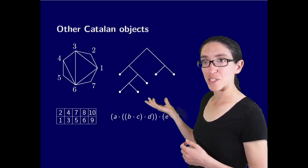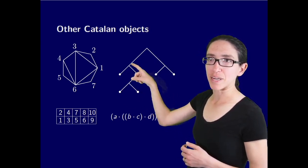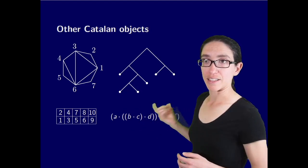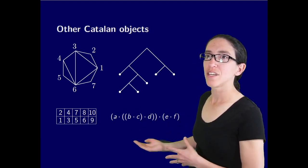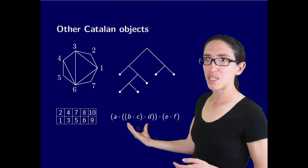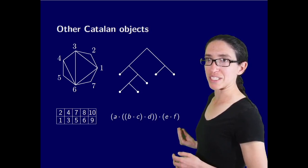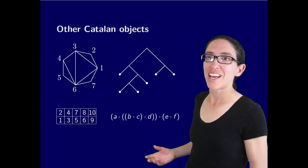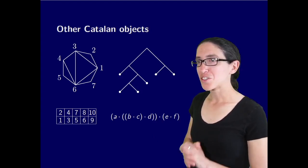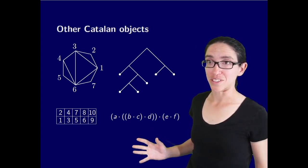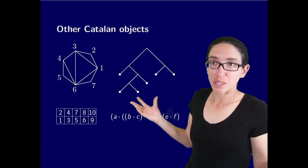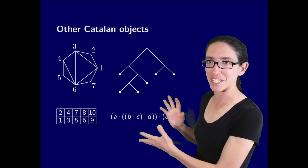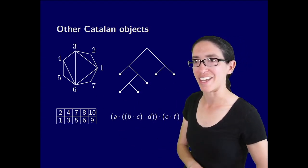It also counts binary trees. In fact it counts binary trees on n plus 1 vertices. How many ways can you make a binary tree where every node has either 0 or 2 children, such that there's exactly n plus 1 leaves. And it's also the parenthesizations of n plus 1 things multiplied together. Here's a way of fully parenthesizing the computation of a times b times c times d times e times f. The number of ways to put the parentheses is also the Catalan number C5. There's so many other interpretations of the Catalan numbers and they seem to just pop up everywhere in mathematics.